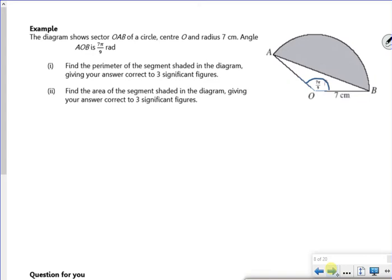Right, so let's do a couple of questions then. The diagram shows sector OAB of a circle, centre O and radius 7 cm. Angle AOB is 7π over 9 radians. Find the perimeter. Oh, that's easy enough then, because the perimeter will be an r, it'll be an r, and it'll be the length, which is r theta.